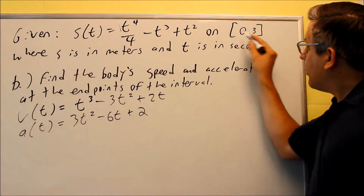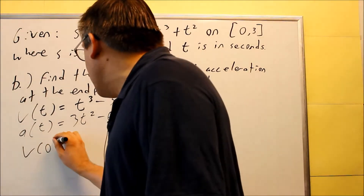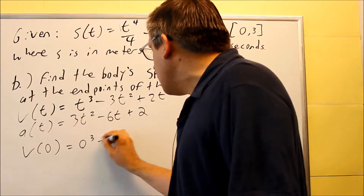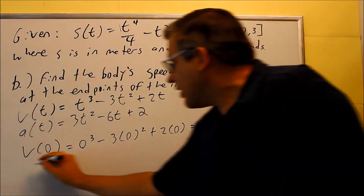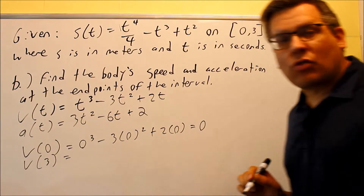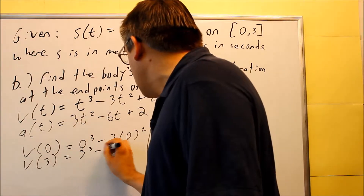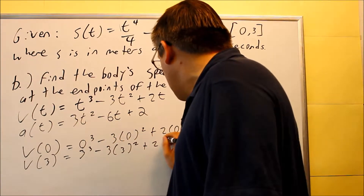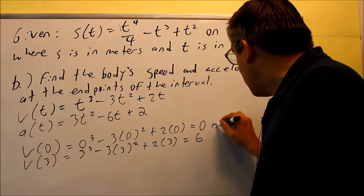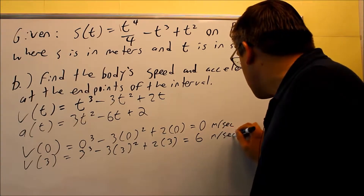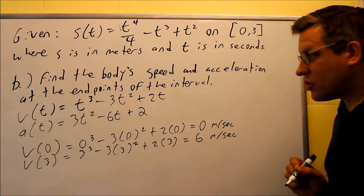Now that we have both functions, we evaluate them at the endpoints. For v(0): zero cubed minus three times zero squared plus two times zero gives zero. Then for v(3): three cubed minus three times three squared plus two times three. If we work all that out, we get six. These are in meters per second, so v(3) equals six meters per second.